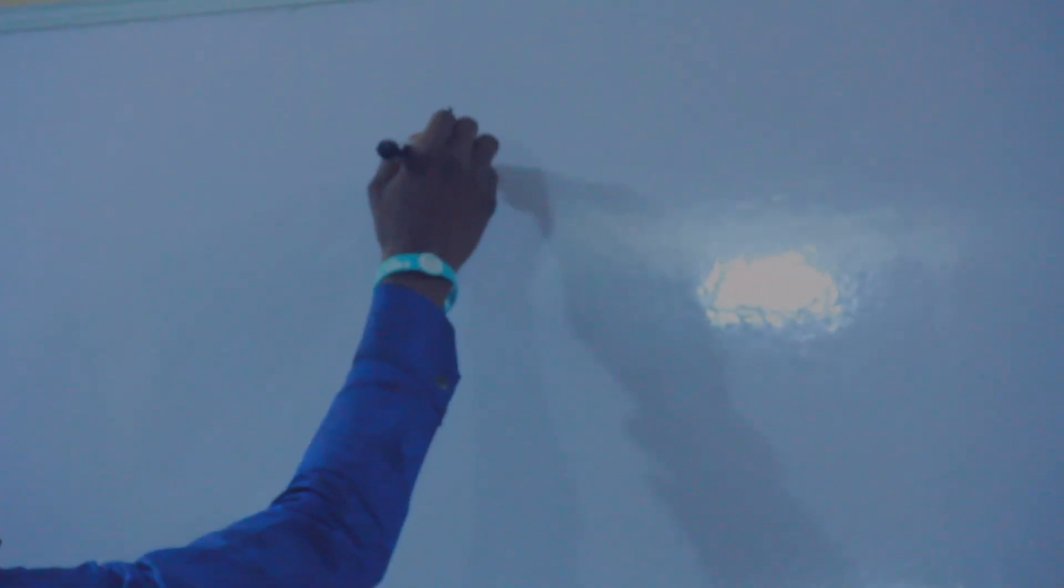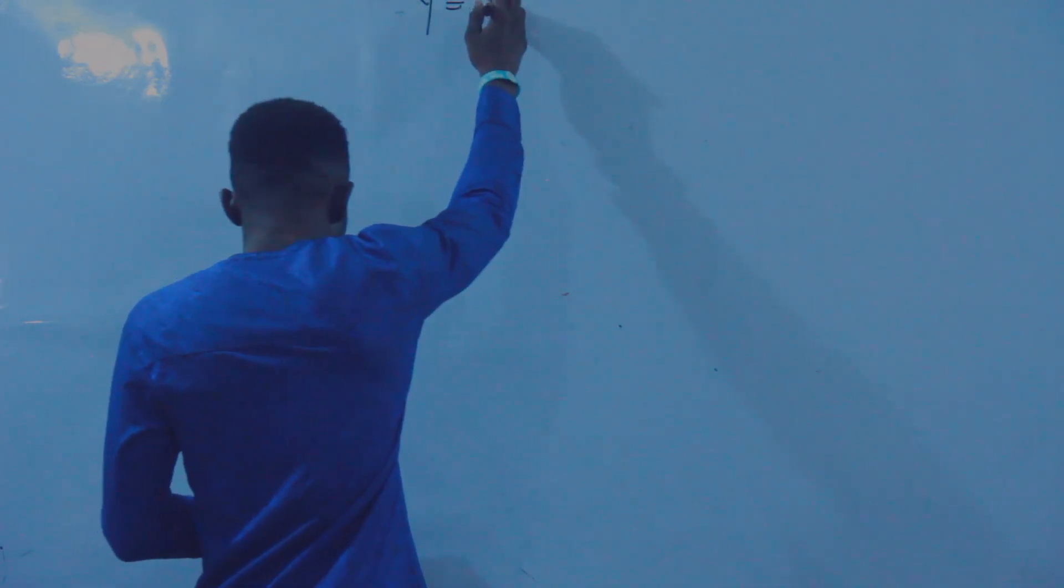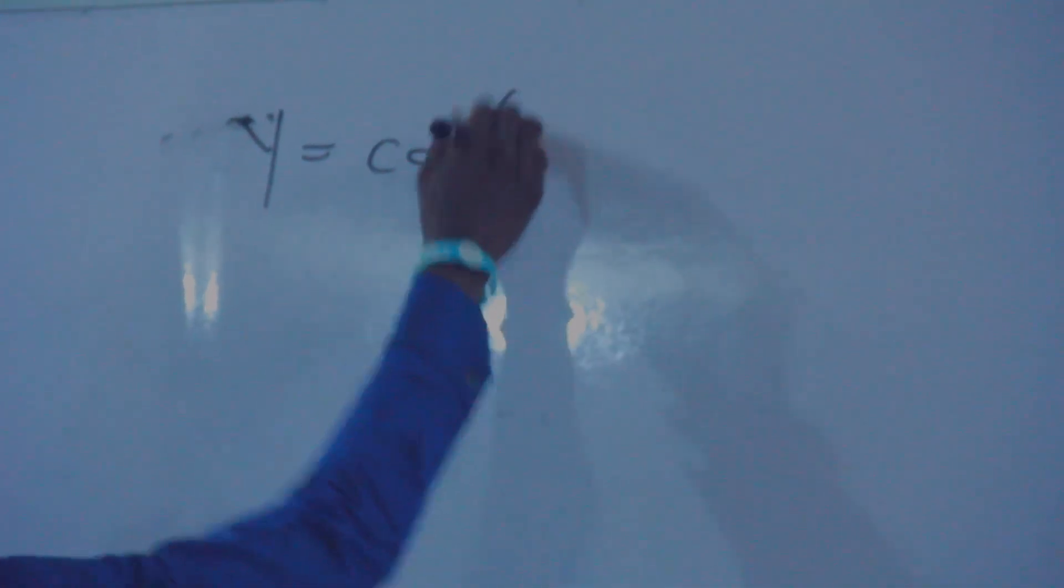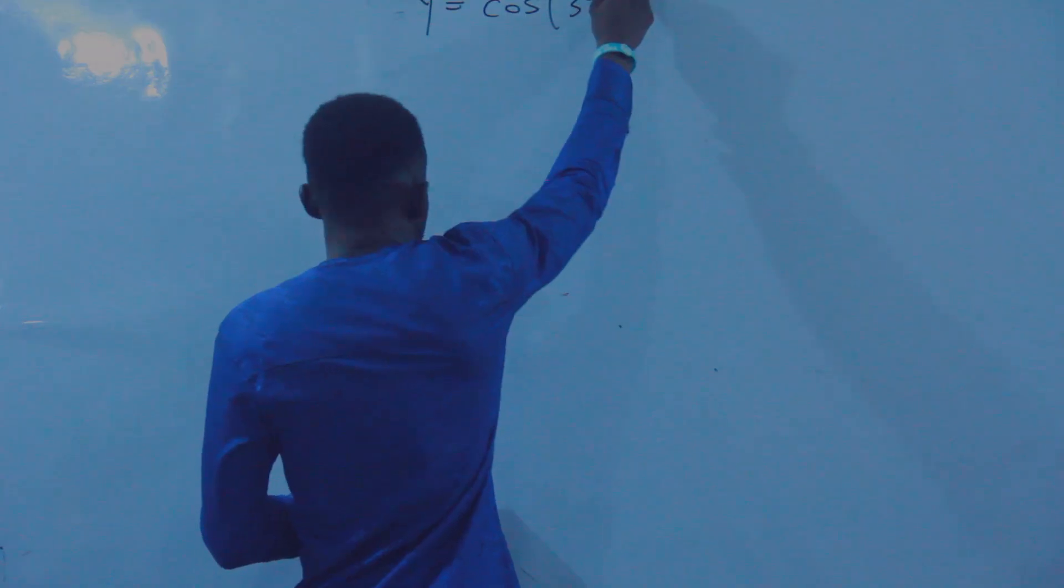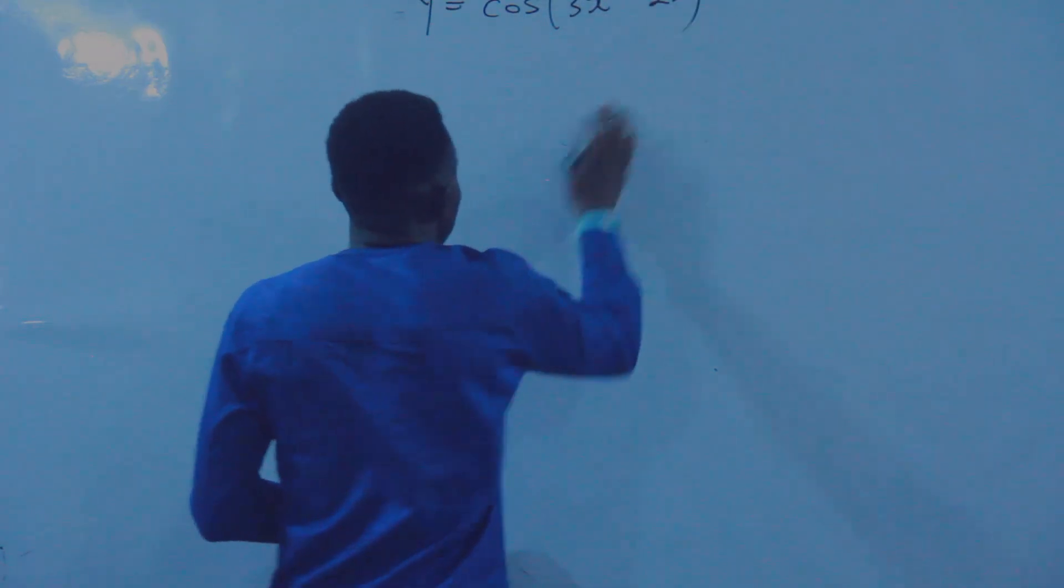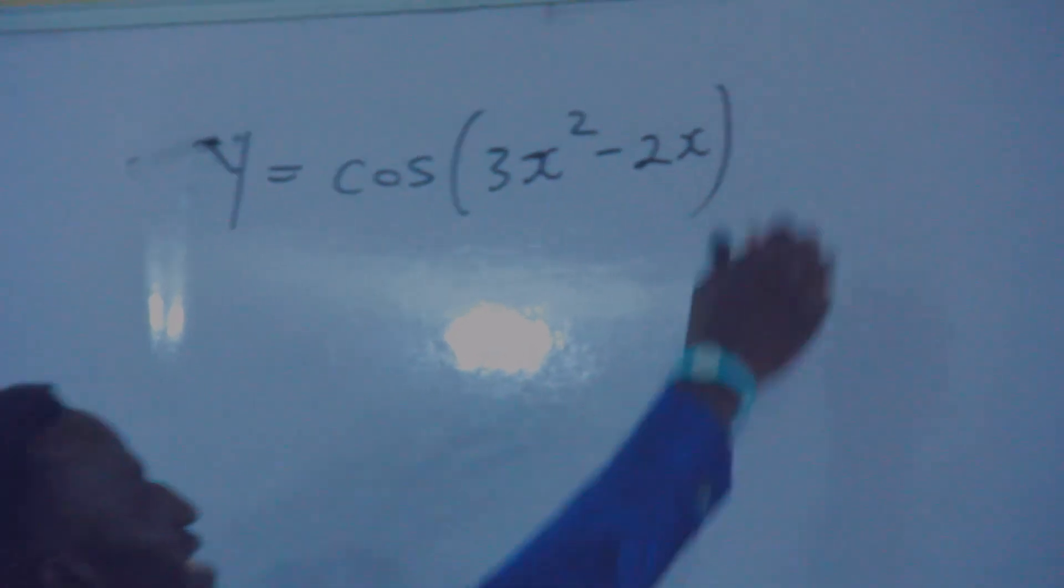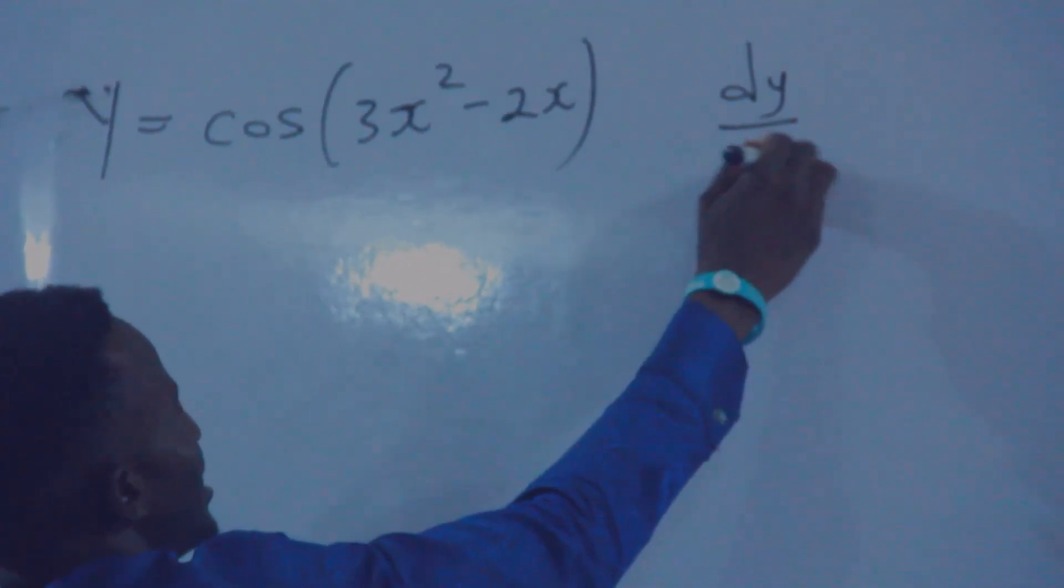Especially, I'll be giving you a question on the function of function aspect. Now let us see. If you are given Y equals cos of 3X squared minus 2X, and you are asked to find dY/dX.